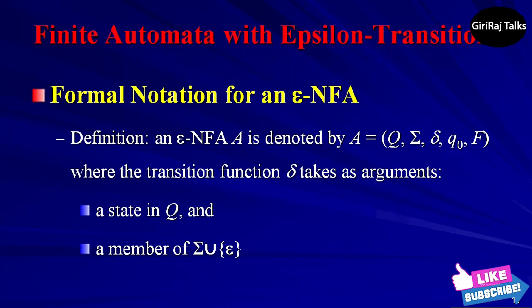Next concept is the formal notation for an epsilon-NFA. We may represent an epsilon-NFA exactly as we do an NFA with one exception. The transition function must include information about transitions on epsilon. Formally, we represent an epsilon-NFA by A equal to (Q, Σ, δ, q0, F) where all components have their same interpretation as for an NFA.